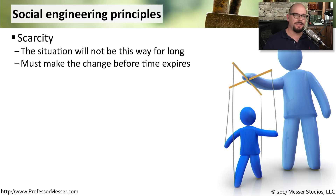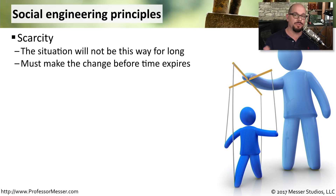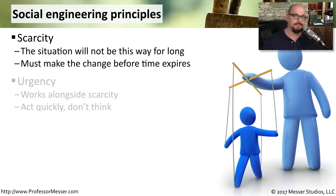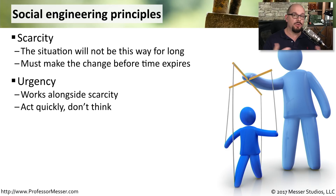Social engineers also like to have a clock that's ticking — there needs to be scarcity. This particular situation is only going to be this way for a certain amount of time. We have to be able to resolve this issue before the timer expires. If the person doing the social engineering can inject some type of urgency, then they can make things move even faster. This needs to happen quickly. Don't even think about it — just provide this information right now so that we can solve this problem.